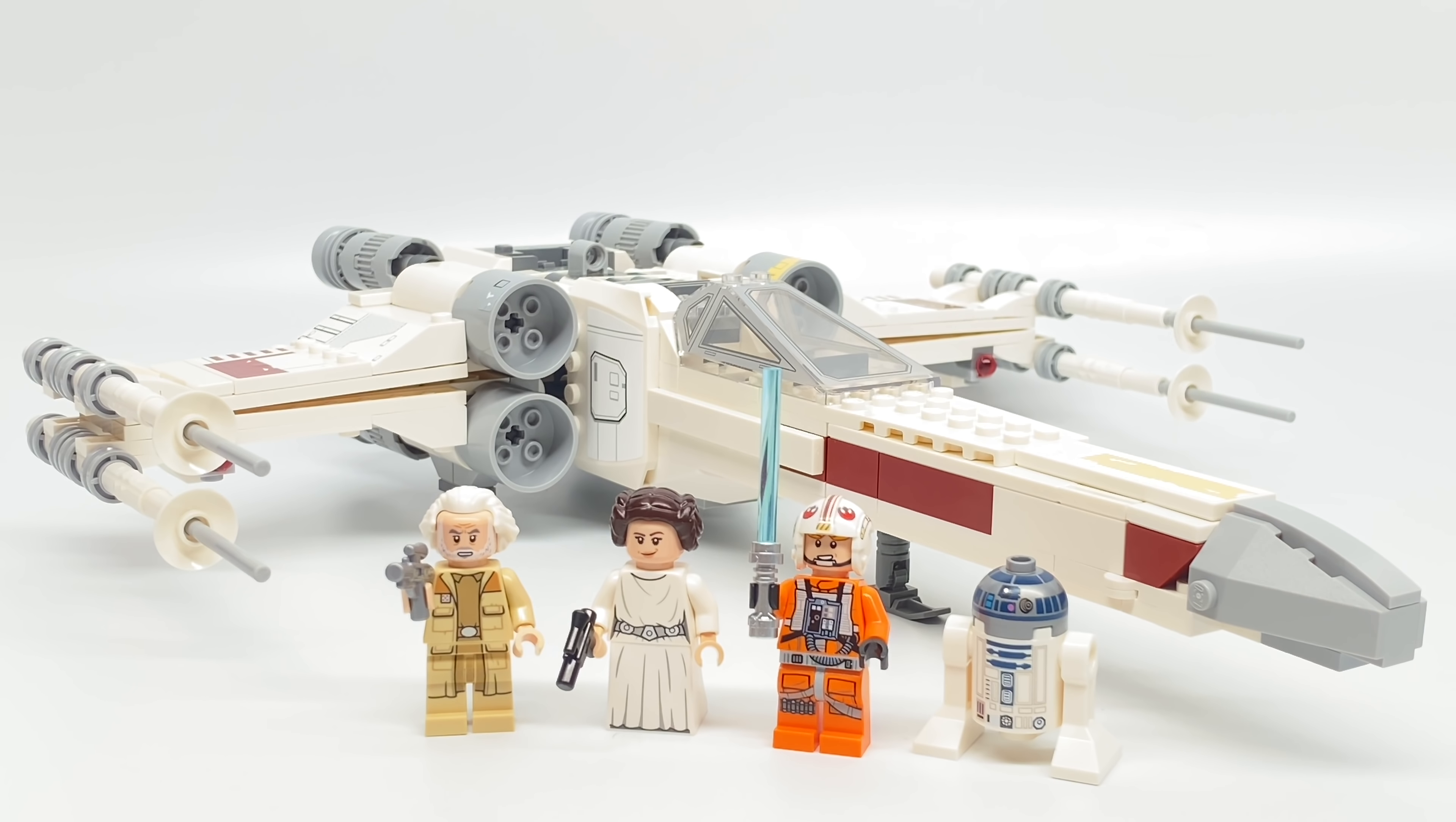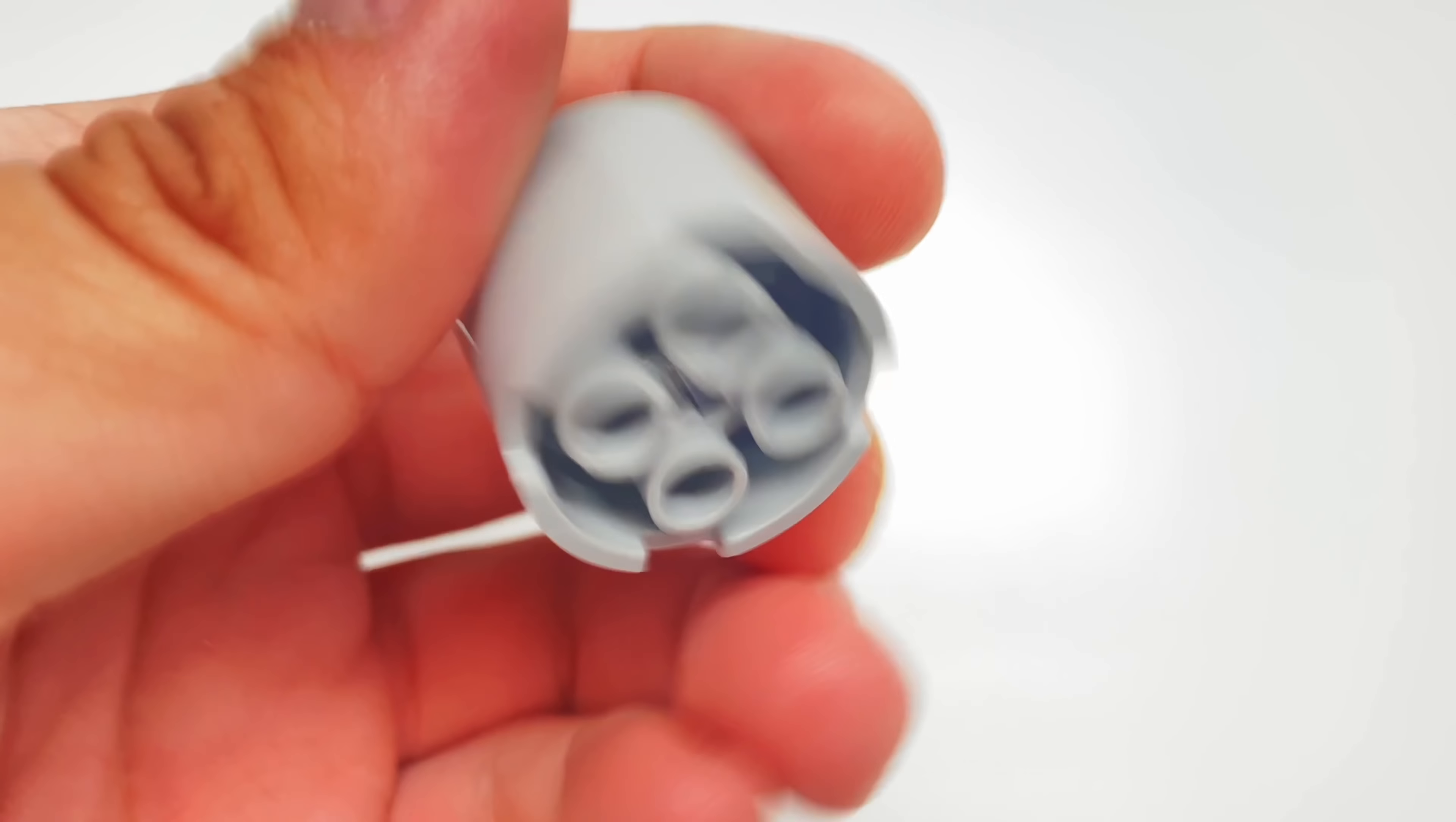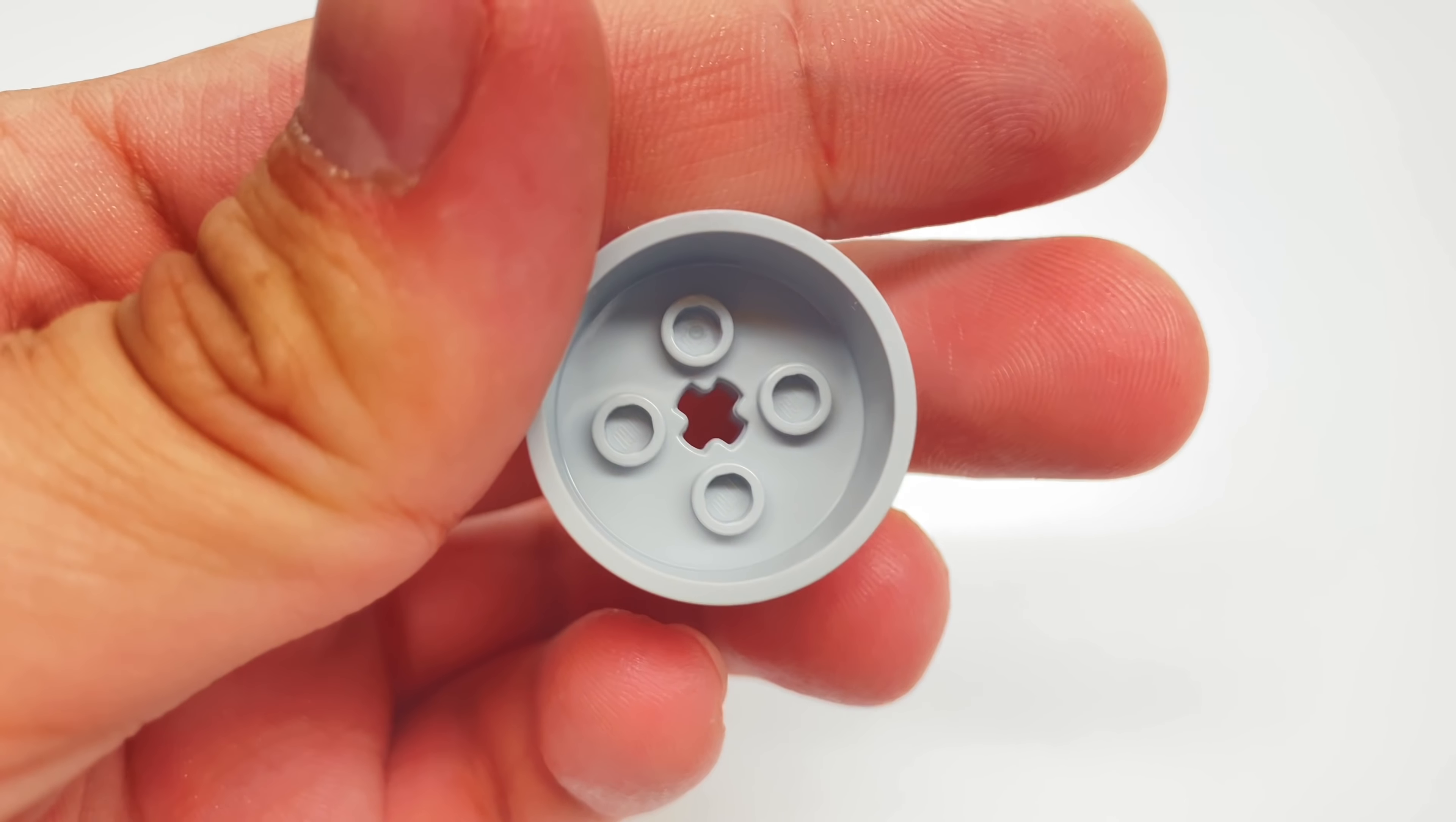In that review, I pointed out that there's a really interesting new piece, a 2x2 cylinder-like piece with a Technic axle hole through the middle, four studs inside.